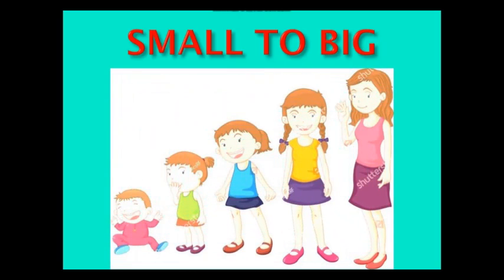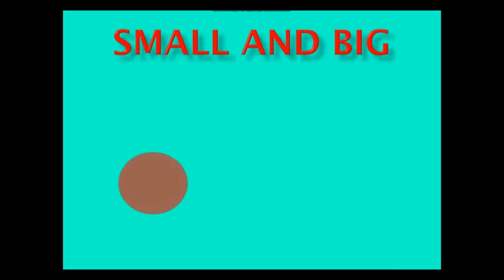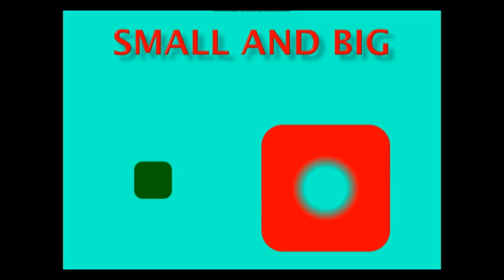All these girls have been arranged from small to big. Can you see the red circle? It is small and the purple circle is big. The green cube is small while the red cube is big.